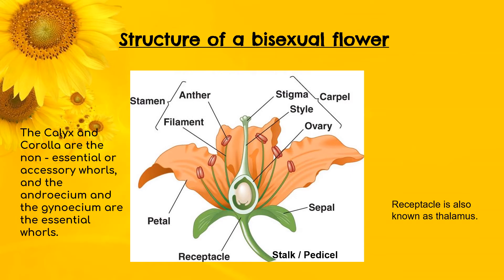Now let's look at the structure of a bisexual flower. The ovary is right below the style, and inside the ovary there are small structures known as ovules. These ovules will become the seed when the flower matures. Another interesting thing to notice is the bilobed structure of the anthers. These anthers contain the pollen grains that will take part in pollination.